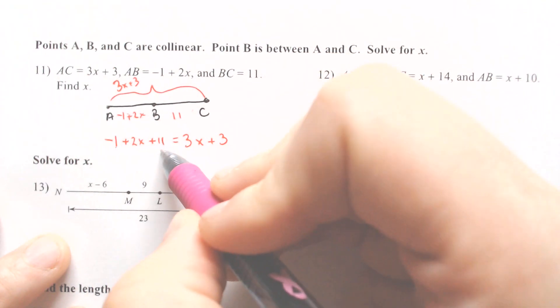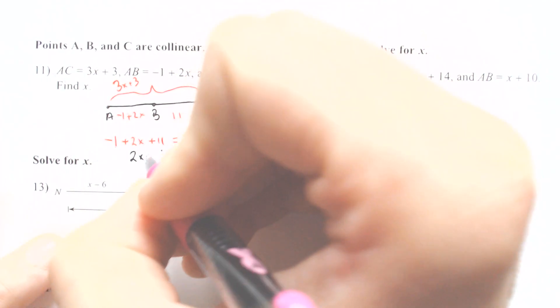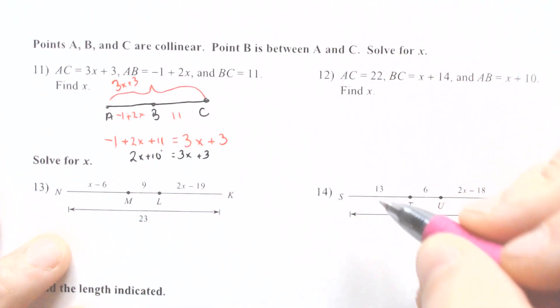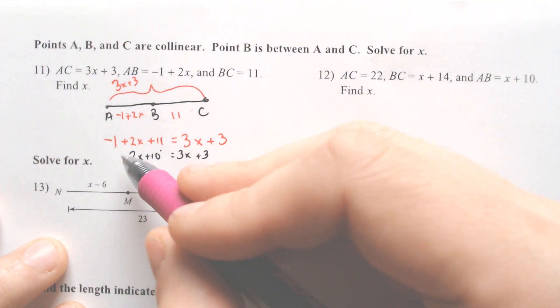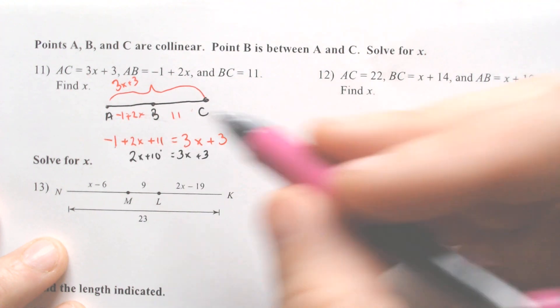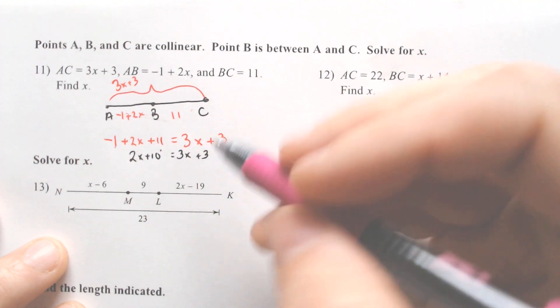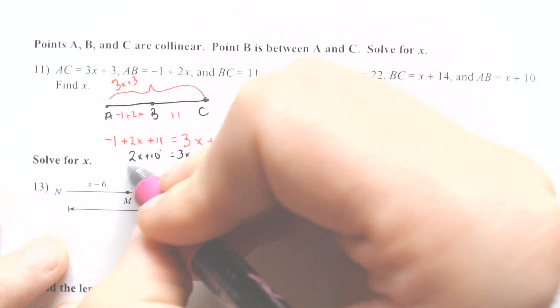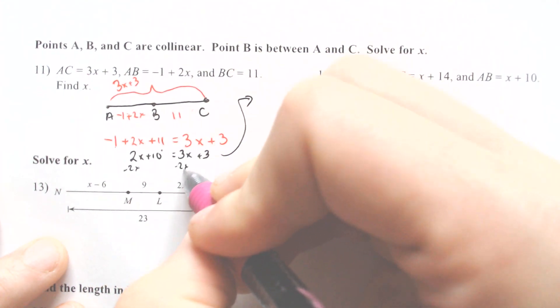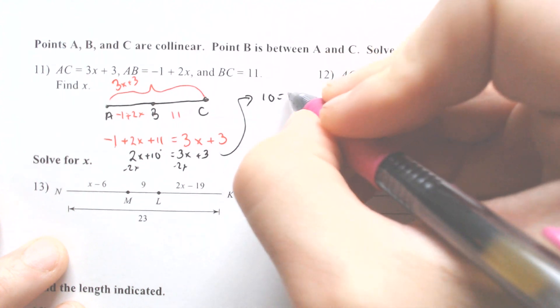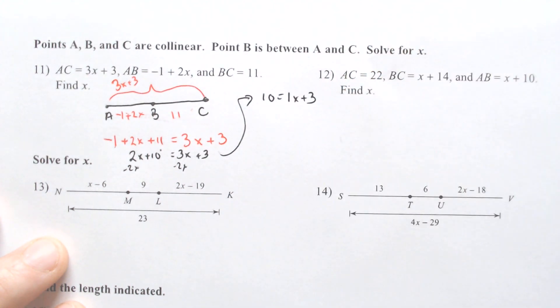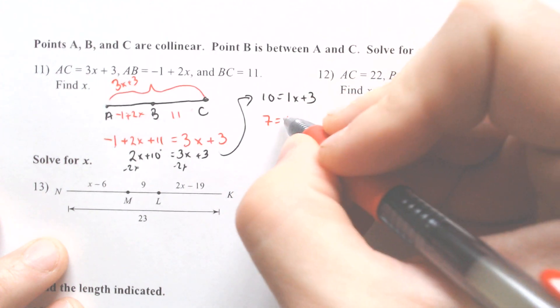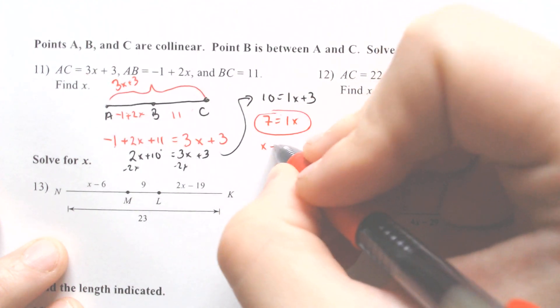Hopefully we're good at solving equations. Negative 1 and 11 combine to make 2X plus 10 equals 3X plus 3. Then we're going to subtract either the 2X or the 3X. I would rather subtract the 2X because then it would leave me with a positive 1X. So I'm going to subtract 2X from both sides, and that would leave me with 10 equals 1X plus 3.